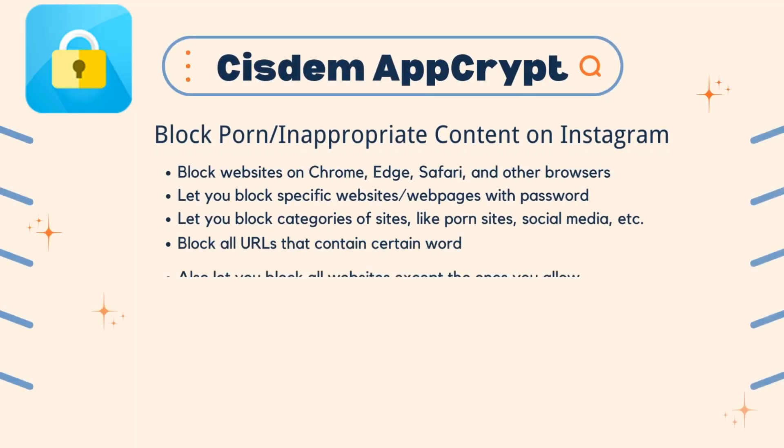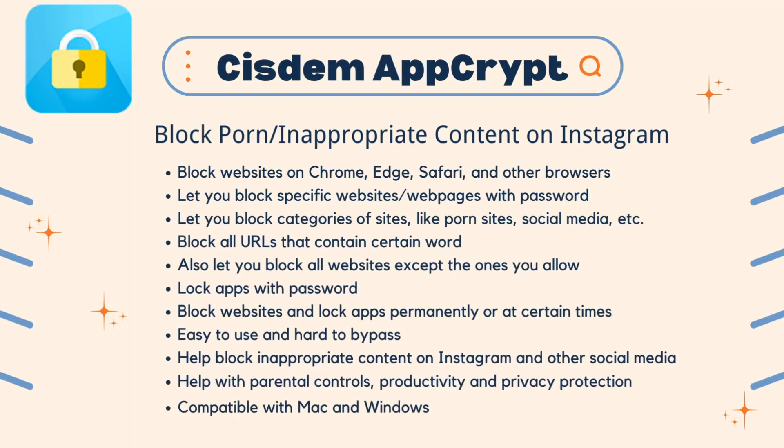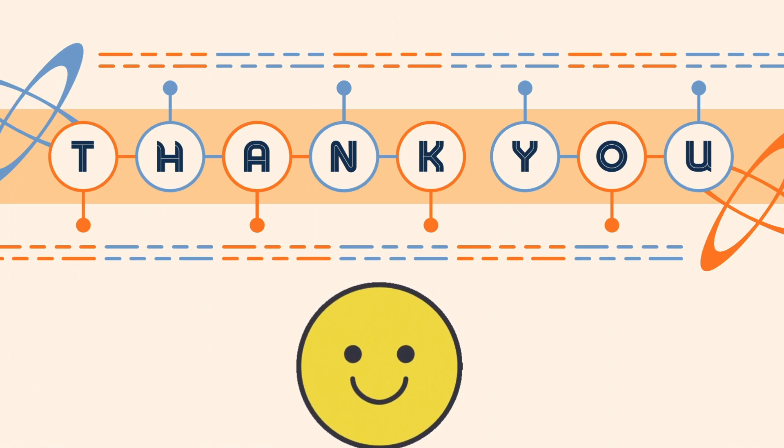This is all about how to block inappropriate content on Instagram using System AppCrypt, through adjusting built-in settings, or using a combination of the two. System AppCrypt is an easy-to-use and powerful website blocker and app locker tool compatible with Windows and Mac. It helps with parental controls, productivity, and privacy protection. The free download link is in the description section below this video. Thanks for watching.